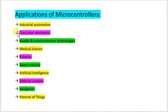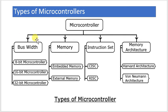Before we start with the applications one by one, we will briefly understand how many types of microcontrollers there are, or how we can classify different microcontrollers, and which parameters we can use to classify them. The first and most common parameter is bus width. Based on bus width, we can classify microcontrollers as 8-bit, 16-bit, or 32-bit.